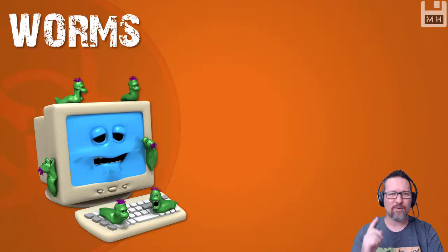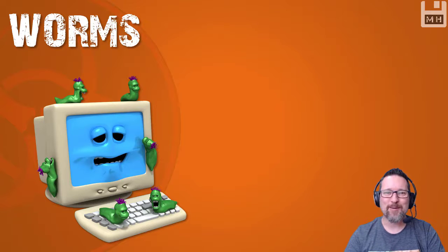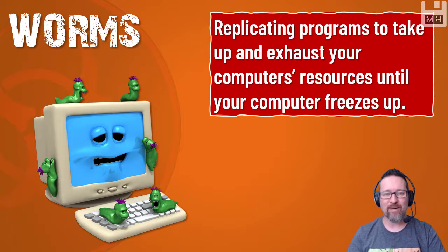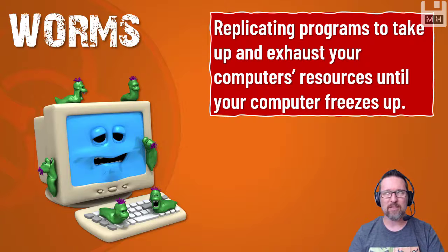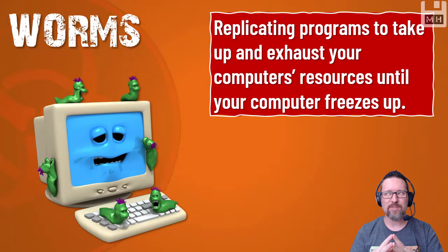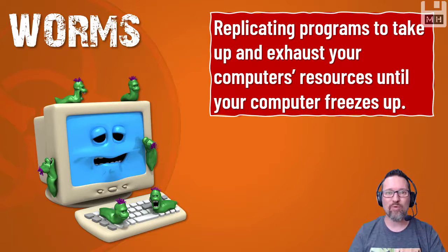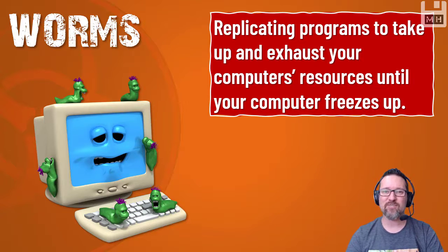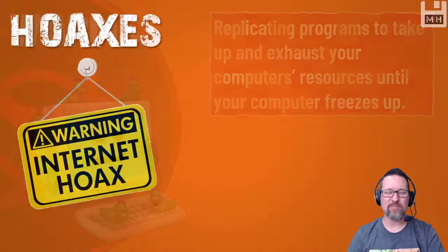It's not only your dog or cat that gets worms — your computer can get worms as well. A worm is a program, an application, that keeps replicating itself, making copies of itself over and over again. The whole purpose is that it starts to use up the RAM on your computer and the CPU — the central processing unit — taking up more and more RAM until your computer is so busy trying to process the stuff that it just freezes up, hangs, and dies. That's what a worm does to your computer.